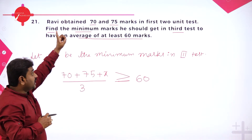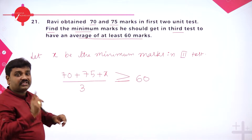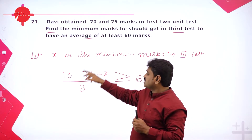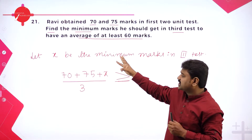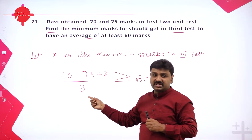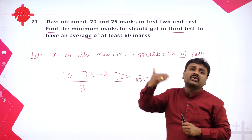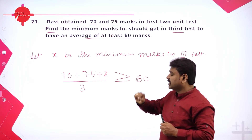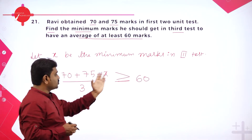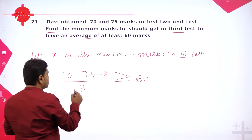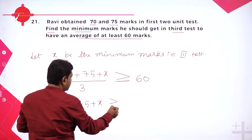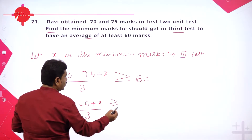This is an inequality. Reading the problem and reading this inequality is important. They gave two test marks: first test is 70, second test is 75, third test not given — assumed x. Average means sum of marks by number of tests, and it should be at least 60 — meaning 60 or more than 60. Transfer 3 to that side: 70 plus 75 becomes 145 plus x, greater than or equal to 60.